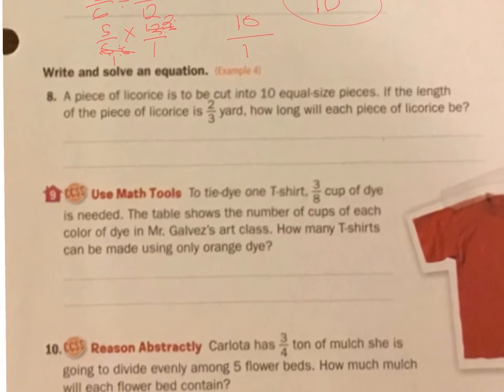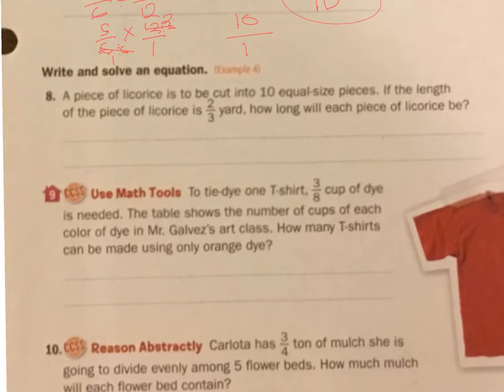Let's look at this next one. We have licorice something. A piece of licorice is to be cut into 10 equal-sized pieces if the length of the piece of the licorice is 2/3. So the length of the piece of licorice is 2/3. And I'm dividing it into 10 equal pieces. How long will each piece be? So it's 2/3 divided by 10.